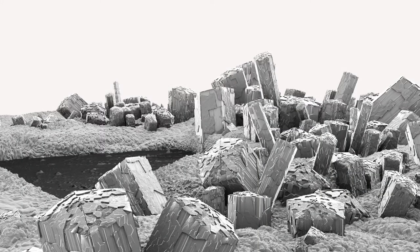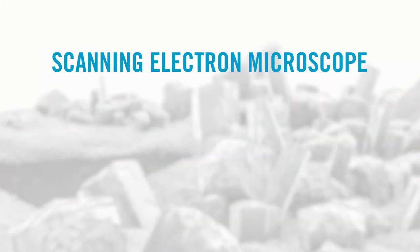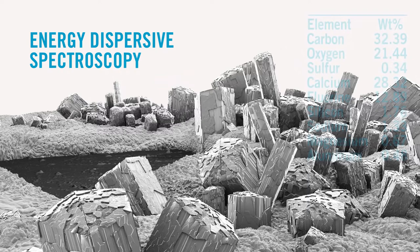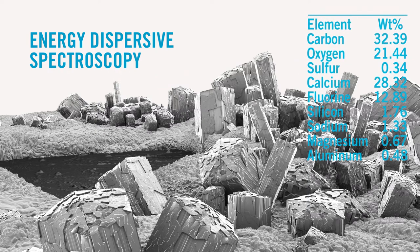Before us, we see the peaks and valleys of the foulant deposited on the membrane surface as we would during scanning electron microscope or SEM imaging. SEM allows us to see the morphology, or shape, of the foulant material. However, SEM does not tell us the composition of the material. We pair this technique with Energy Dispersive Spectroscopy, or EDS.